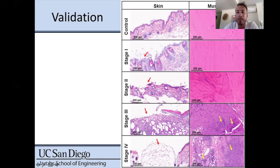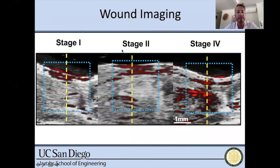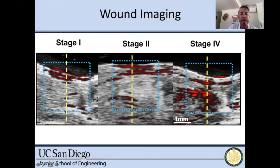We first validated our model using histology, comparing it to the human scenario. In healthy skin we see an intact epidermis, dermis, and healthy muscle. As we progress through advanced stages, we appreciate dysregulation of the epidermis, then the dermis, and at advanced stages, dysregulation of the underlying muscle tissue. This confirmed our model recapitulates the human scenario. In wound imaging, the black-and-white is regular pulse-echo ultrasound and the red pixels are the photoacoustic overlay. As stages progress, we see more photoacoustic signal that extends deeper into tissue.